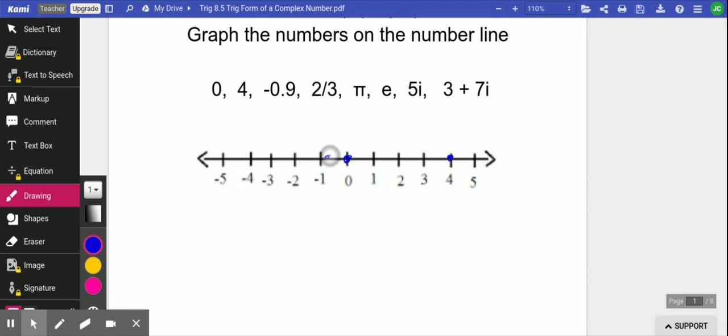We'll graph 4, negative 0.9, 2 thirds, pi at 3.14, and e at 2.7. You can see we have whole numbers, integers, rational numbers, irrational numbers, and we've got all of those on the number line.